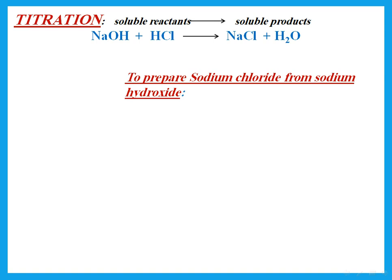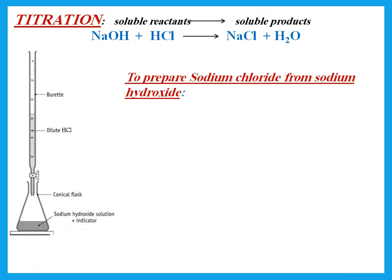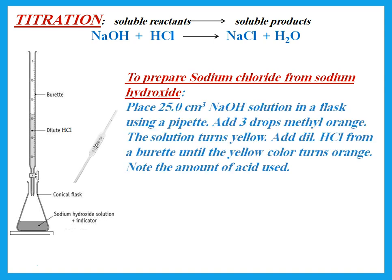The question is how much acid to add to the base to end up with a neutral solution. We go through titration using a burette, a flask, and a pipette. We fill the burette with acid, then place a specific amount — 25.0 cm³ — of sodium hydroxide into the flask using the pipette. 25.0 means exactly 25 cm³ of sodium hydroxide.